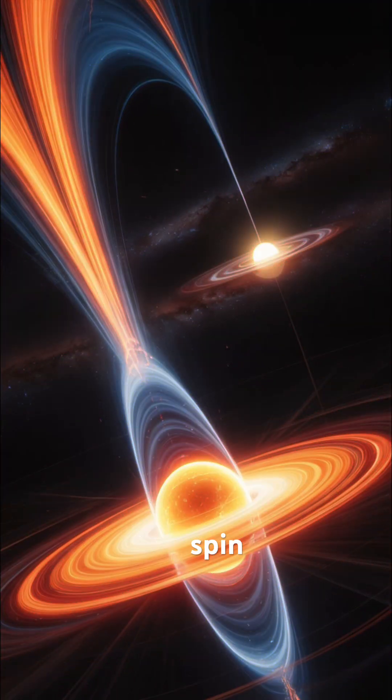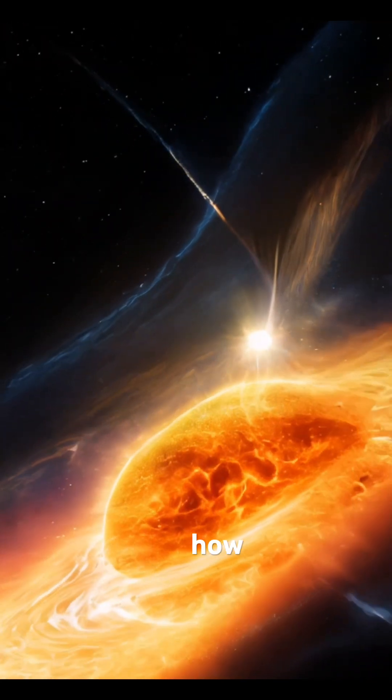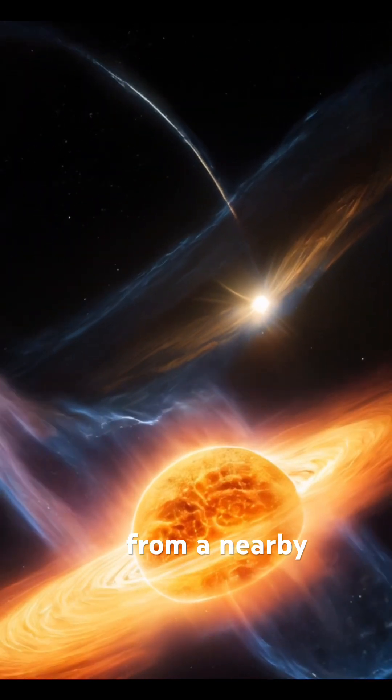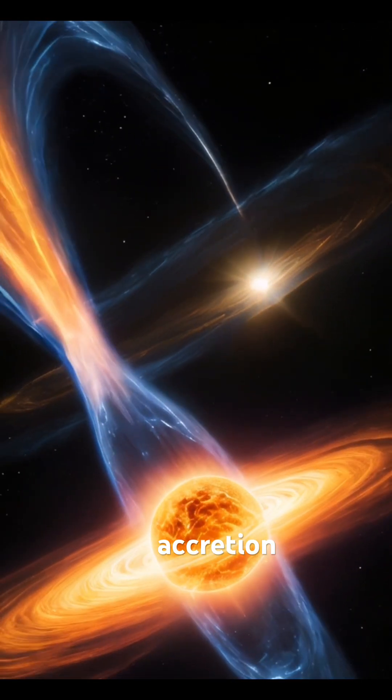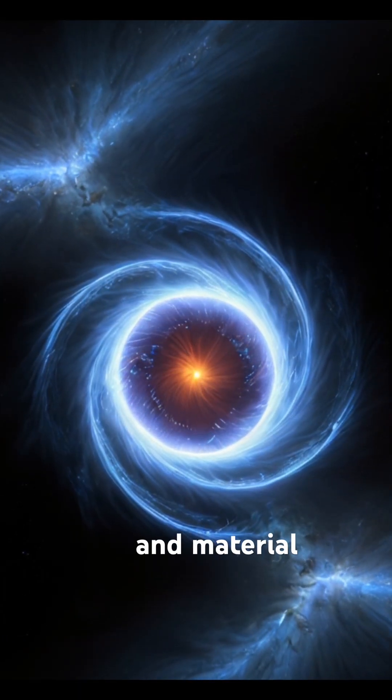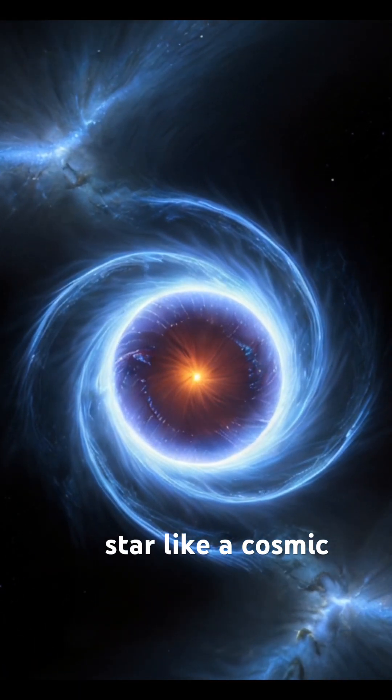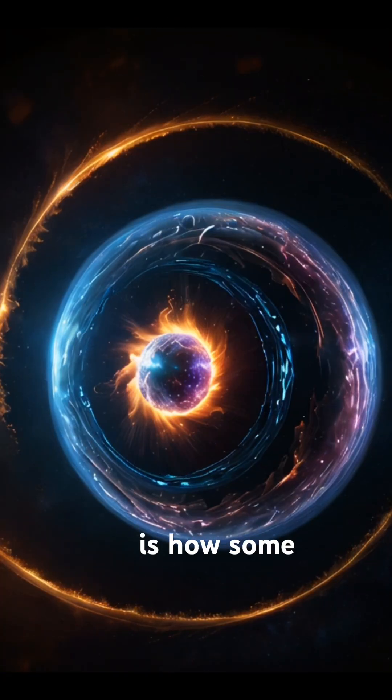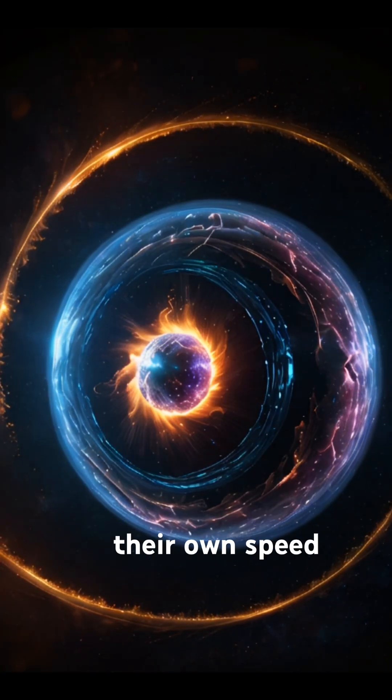But some neutron stars spin even faster over time. How? By stealing matter from a nearby star in a cosmic process called accretion. As gas and material spiral in, it speeds up the neutron star like a cosmic turbocharger. This is how some stars keep breaking their own speed limits.